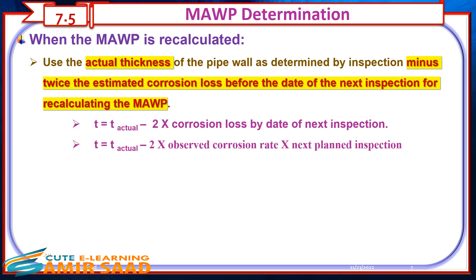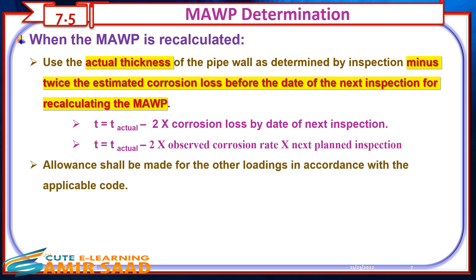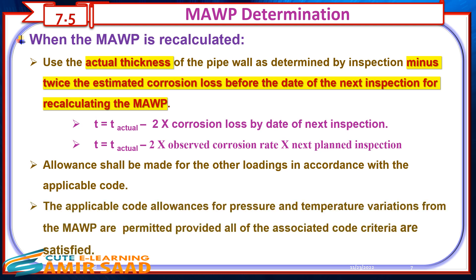The formula is: T equals T-actual minus 2 times corrosion loss by date of next inspection, or T equals T-actual minus 2 times observed corrosion rate times next planned inspection interval. Allowance shall be made for other loadings in accordance with the applicable code. The applicable code allowances for pressure and temperature variations from the MAWP are permitted, provided all of the associated code criteria are satisfied.